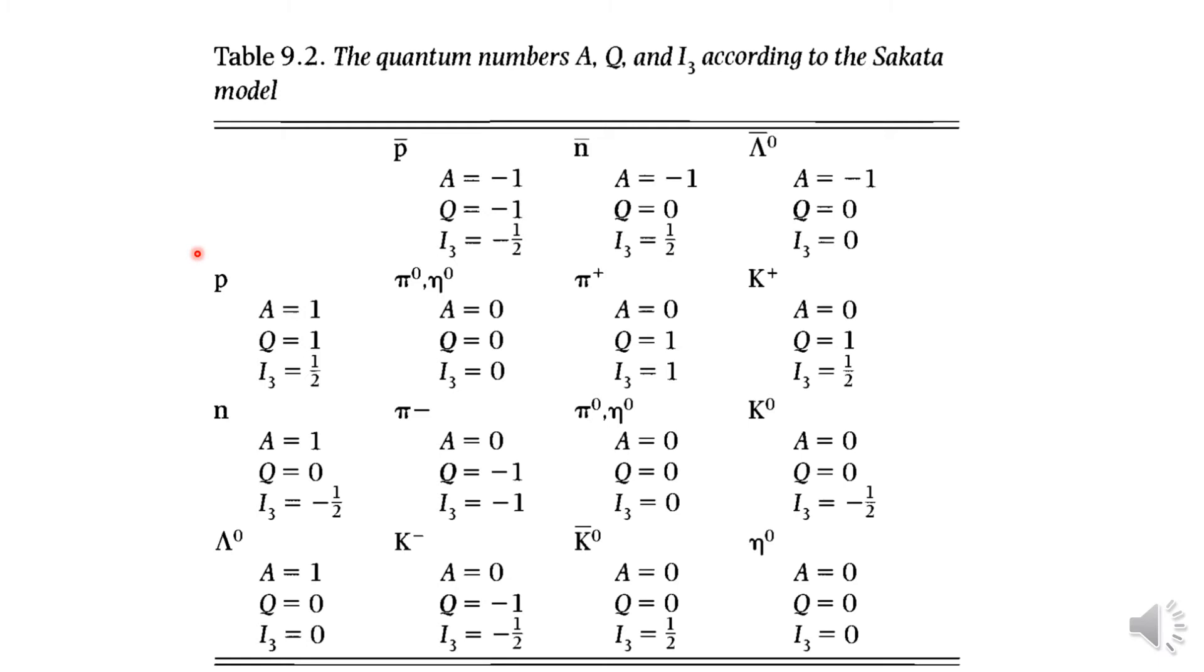So we will see the proton and antiproton have these quantum numbers. A is equal to 1, Q is equal to 1 and this third component I3 is 1 by 2 and the antiproton has all the negative ones. That is minus 1, minus 1, minus half. And this neutron has A is equal to 1, Q is equal to 0 and I3 is equal to minus 1 by 2.